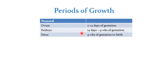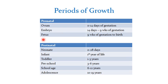For prenatal growth, the product of conception between 0 to 14 days of gestation is called an ovum. From 14 days to 9 weeks it is referred to as an embryo, and beyond 9 weeks to birth it's called a fetus. In postnatal growth, a neonate is between 0 to 28 days of life, while infant refers to the first year of life. Toddlers, preschoolers, and school age are important terminologies. Adolescence is defined by WHO as 10 to 19 years of age, and it is gaining remarkable importance in pediatric practice.